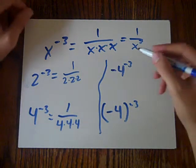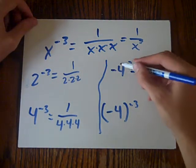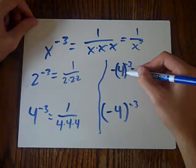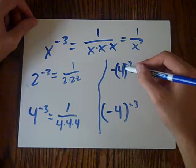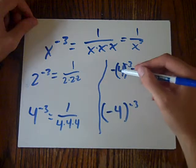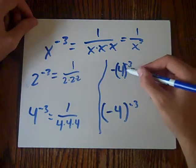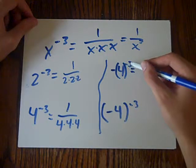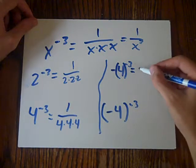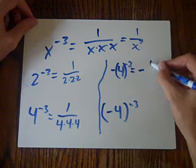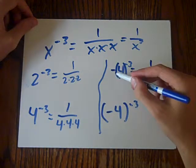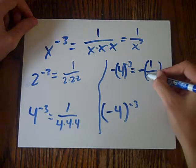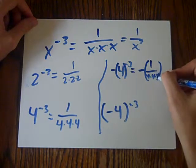So the invisible parenthesis right here — basically there's an invisible parenthesis around every number. So just remember that. So basically this 4 to the power of negative 3, just multiply by negative 1 in the end because it's a negative sign outside, so it'd be 4 times 4 times 4.